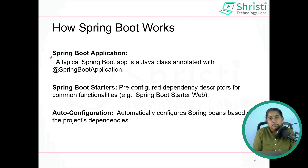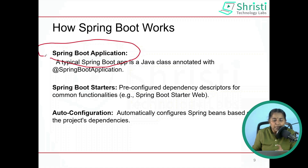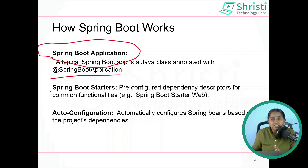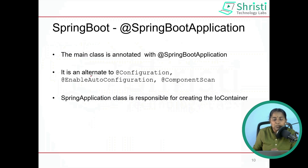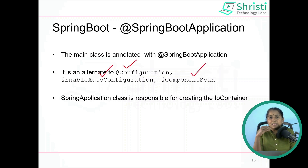Once the application is ready, you will have a top-level package with a main class. The main class will be annotated with @SpringBootApplication. Along with that, Spring Boot starter packages will be added to your pom.xml, and based on the dependencies you added, auto-configuration of those dependencies will also be done. The @SpringBootApplication annotation is a combination of @Configuration, @EnableAutoConfiguration, and @ComponentScan.